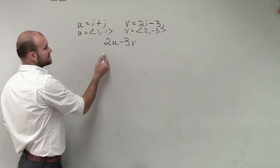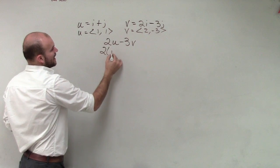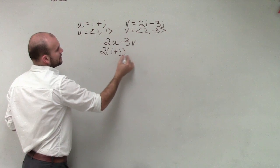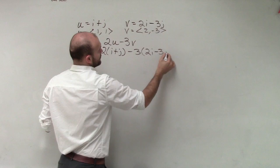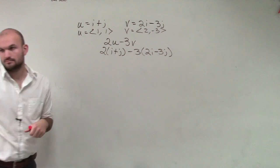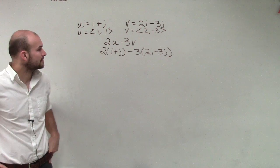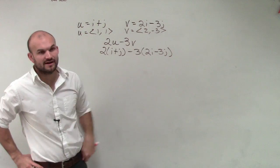2u is going to be 2 times i plus j minus 3 times 2i minus 3j. Because we're saying u is that vector and v is that vector.